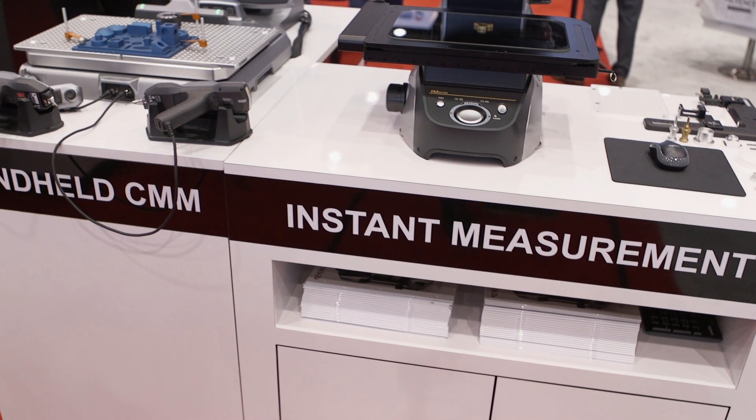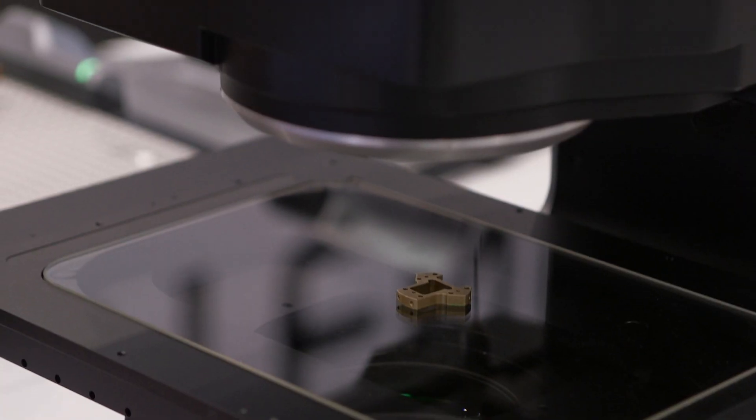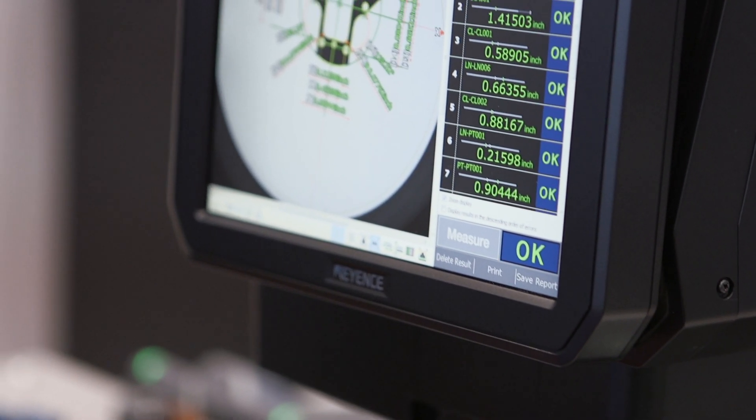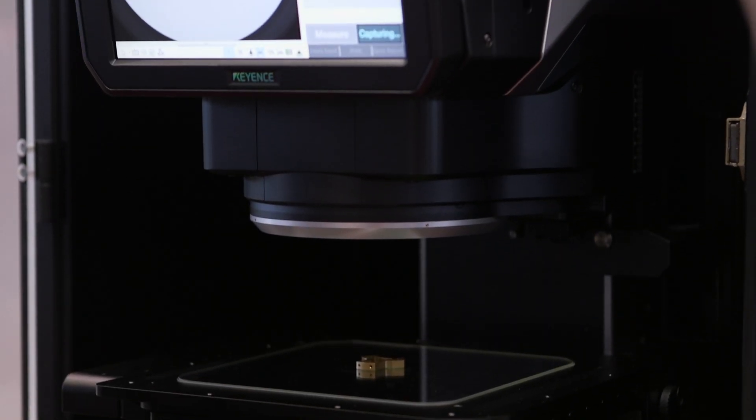And could you tell us a little bit about the IM7000 series? The IM series is an instant measurement system. Think of it as a next-generation automated optical comparator that is designed to measure up to 100 critical dimensions to plus or minus 80 millionths of an inch in three seconds.